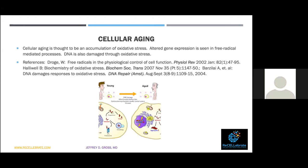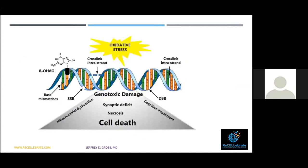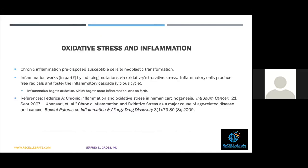Cellular aging is thought to be an accumulation of oxidative stress. As I explained, this leads to altered gene expression and DNA eventually being damaged. Ultimately, we must protect our DNA — if not, cells age and then die. If we want to stay young, we protect our DNA.